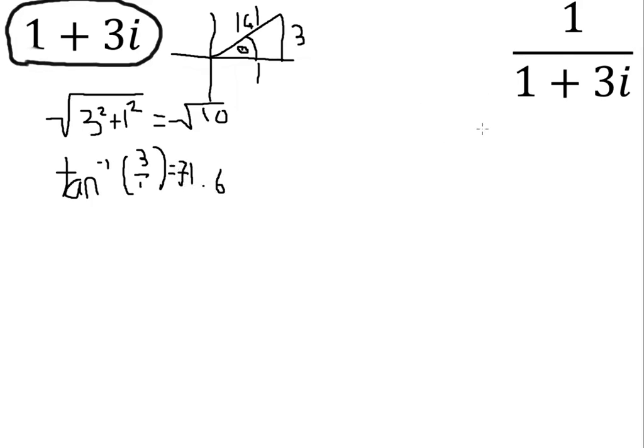For the next one, the easiest way to do this is times it by its complex conjugate, which is 1 minus 3i, times it top and bottom. And then work out this and simplify. 1 minus 3i over 1 minus 3i plus 3i, and then 9, that's 10.